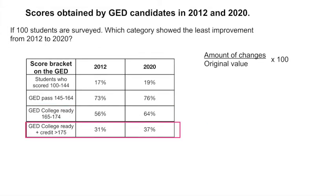Finally, for the college ready students plus credit, the amount of change would be 37 minus 31 divided by 31, which was the original value, times 100, and the percent change would be 19.35%.